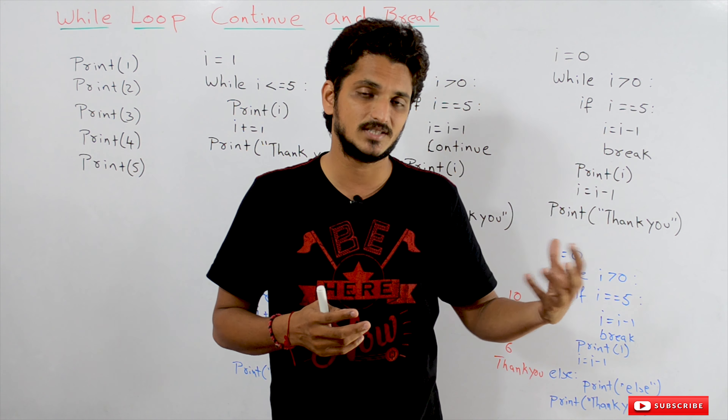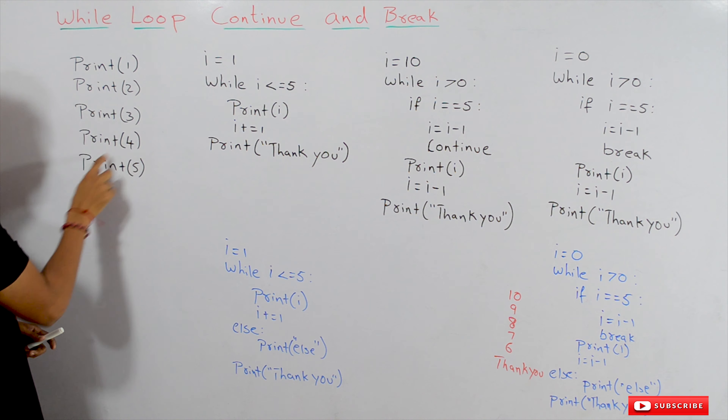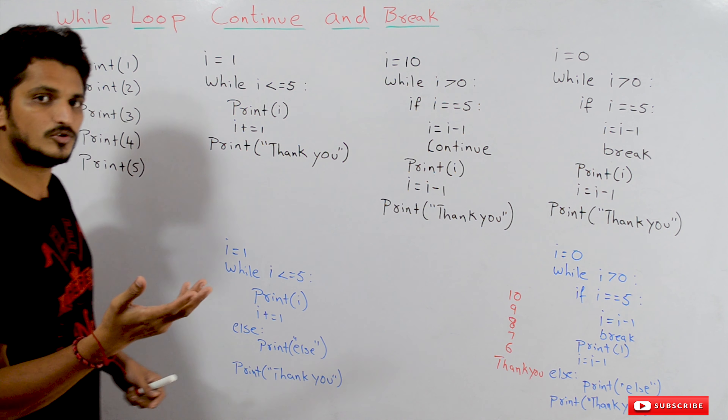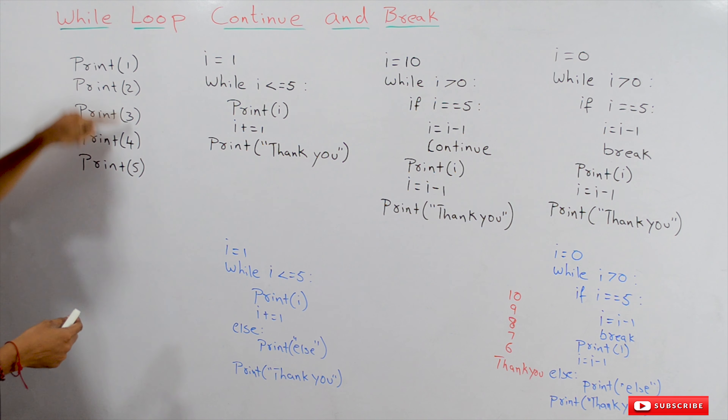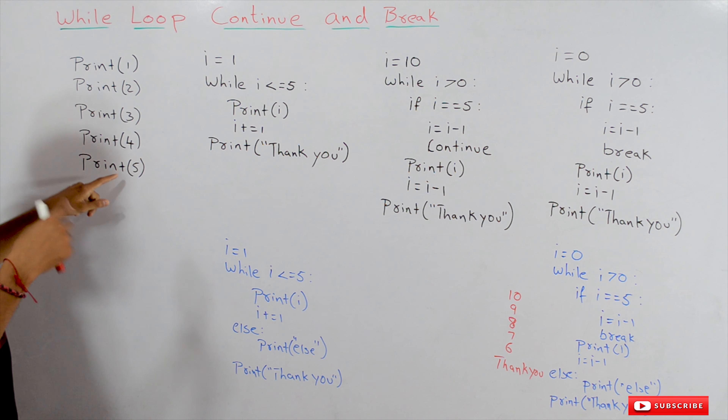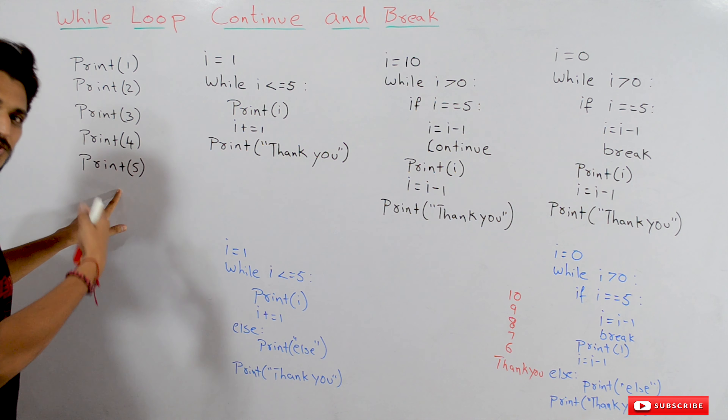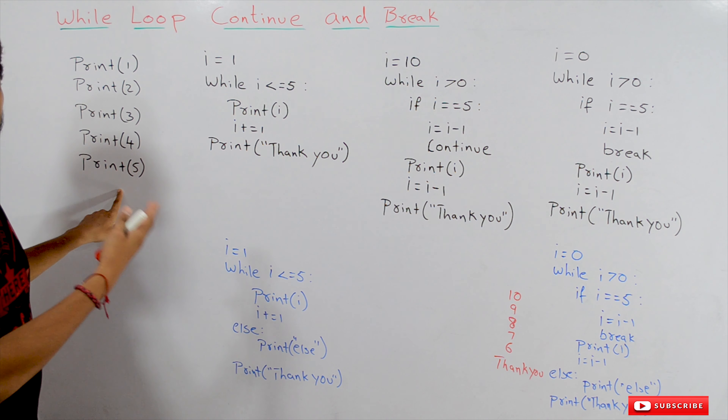Let's take an example. Suppose if someone asked you to display the numbers from 1 to 5. Up to the knowledge we gained in our previous classes, what we do for displaying the numbers from 1 to 5? We would write the code like this: print 1, print 2, print 3, print 4, print 5. If someone asked you to display the numbers from 1 to 100, how many times do we have to write this code? We have to write this code 100 times. Is it the best practice? No, it is not.